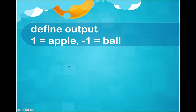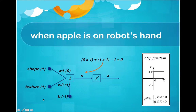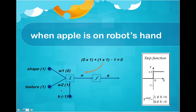We define the output: if the output from the perceptron is 1, then it means apple — the robot predicts apple. If the activation function result is minus 1 then the robot predicts ball. Now let's look at this example. I gave weight W1, weight W2, and bias here. Normally in deep learning we need to find the weights and bias, but in this video I just gave the values: W1 is 0, W2 is 1, and bias is minus 1.